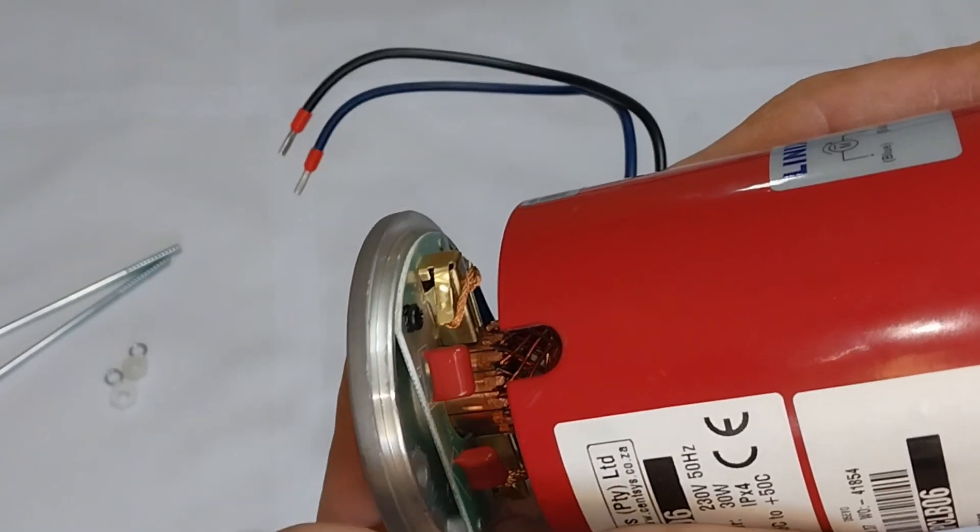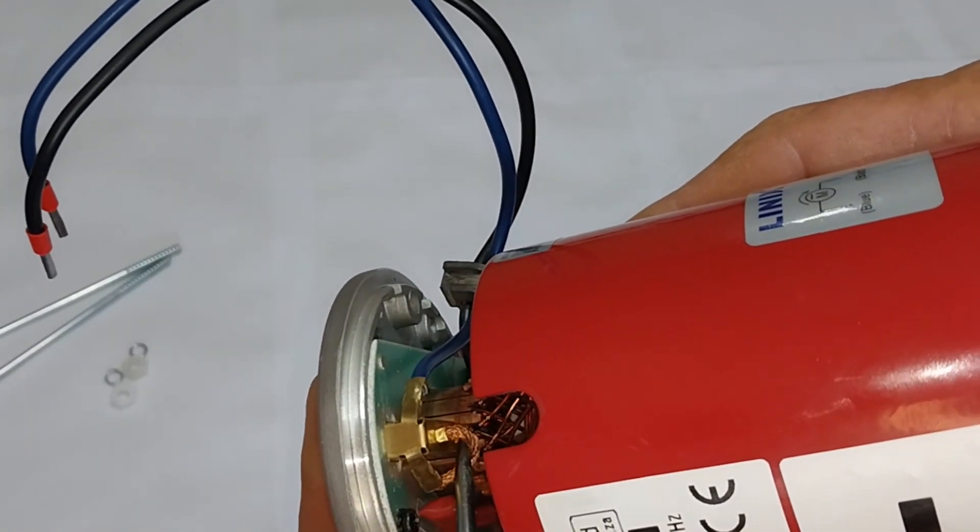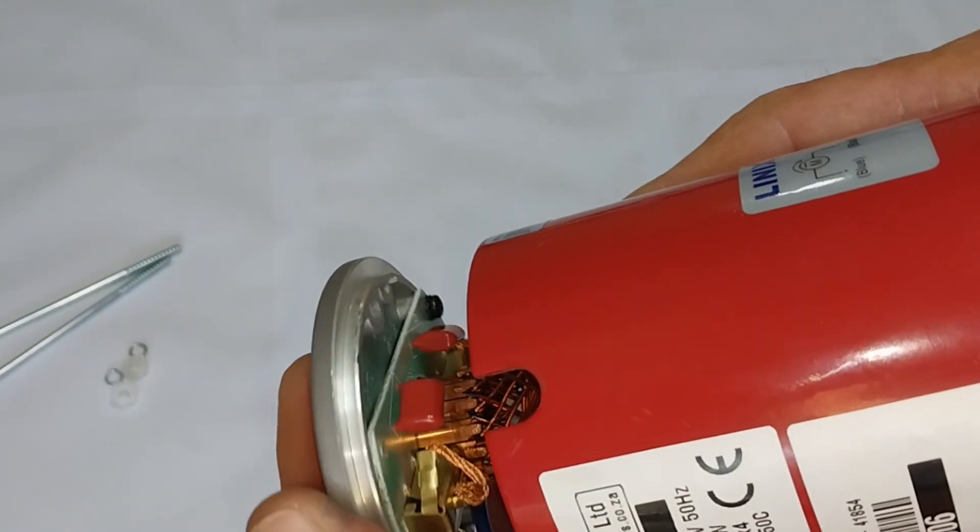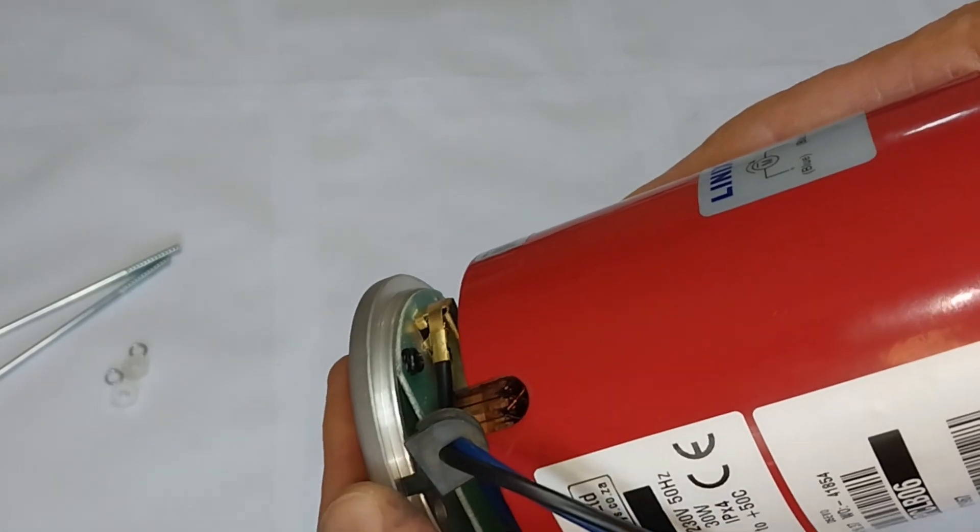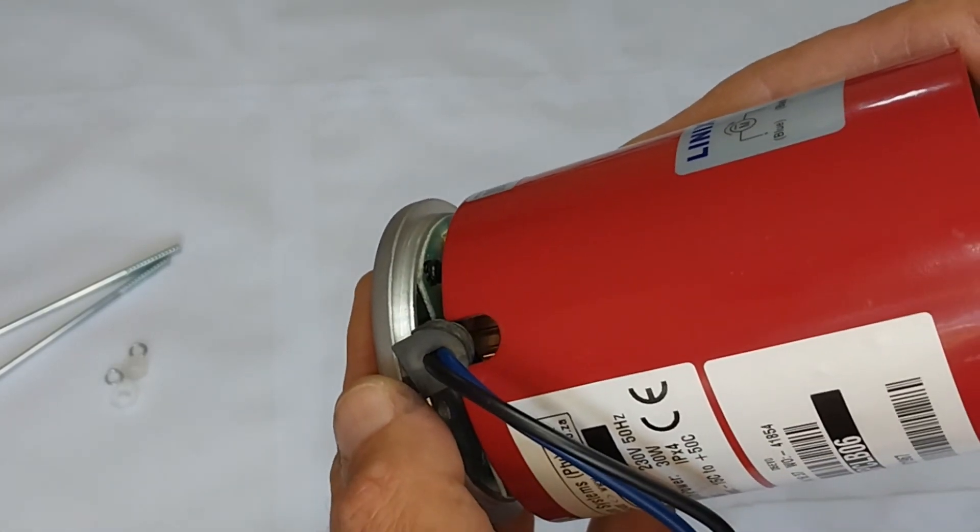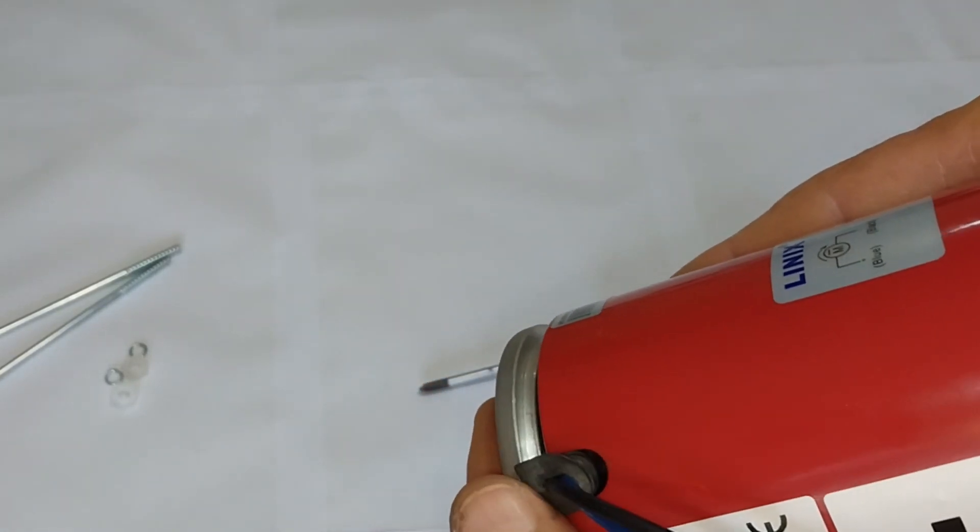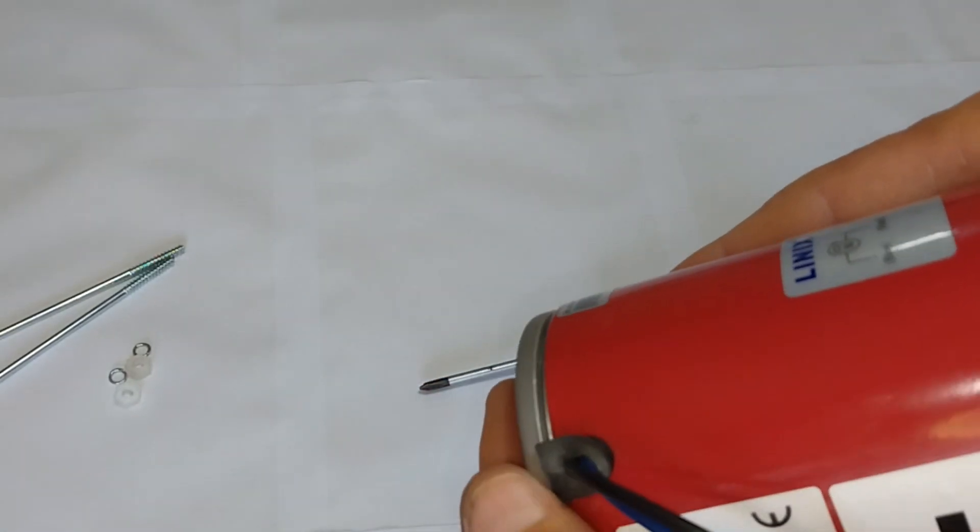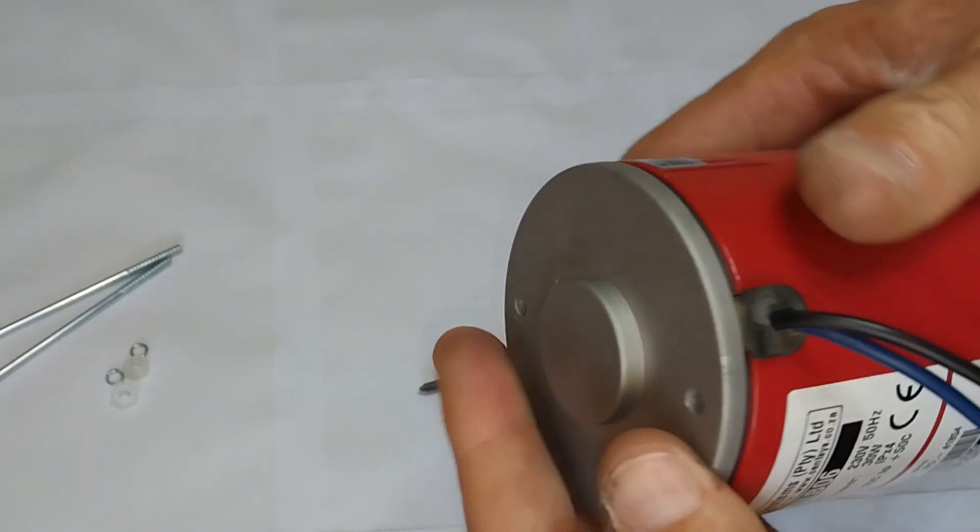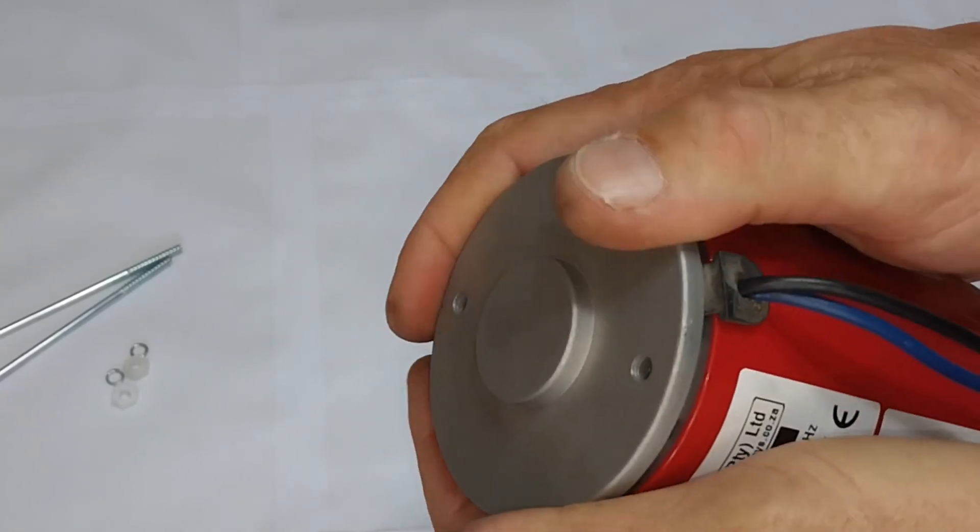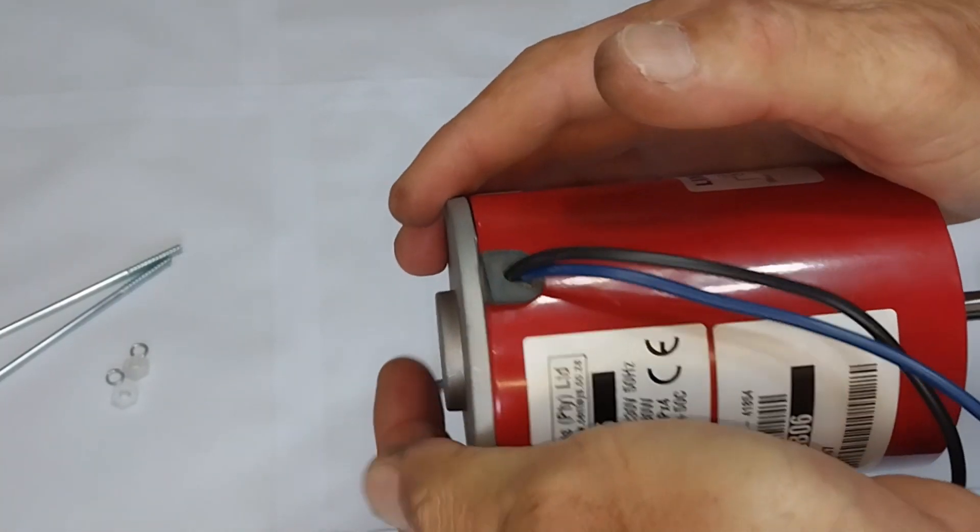I'm going to rotate it 180 degrees. There we can see that both brushes are unhooked. Now we slowly move the electrical motor system back into place. There we have that back section.